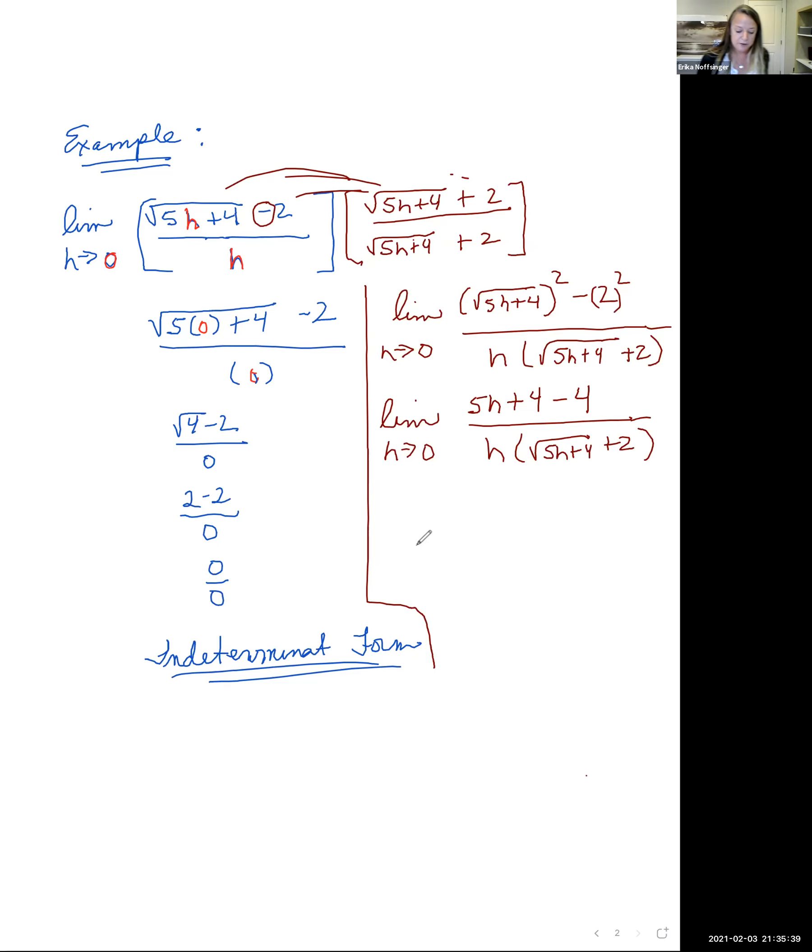So notice in the numerator, those constants cancel, that 4 minus 4 goes away, and we're just left with a limit as h approaches 0 of 5h all over h, and then the square root of 5h plus 4 plus 2.